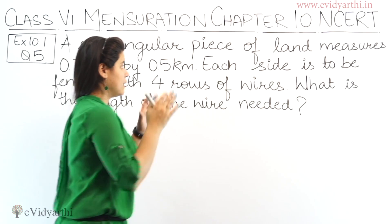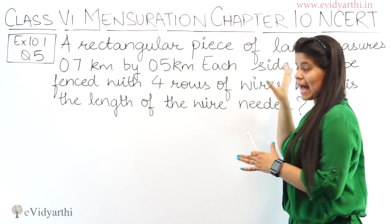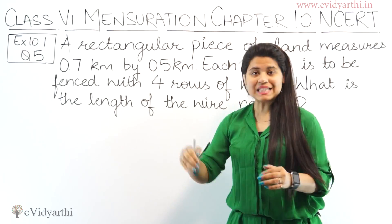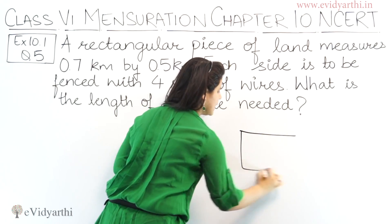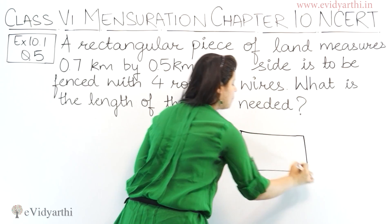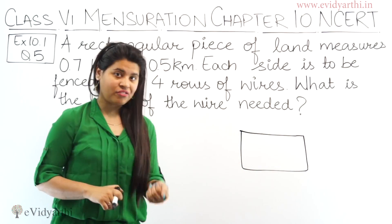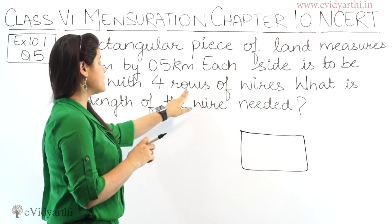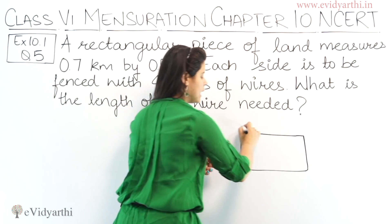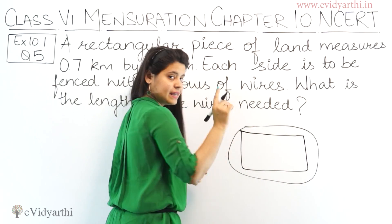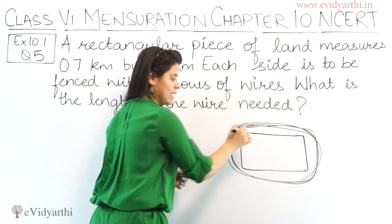What is the length of the wire needed? Here we have a rectangular piece of land with the measurement given. So this is your rectangular piece of land and we have to make this fence along the boundary. It is made with 4 rows of wires — just like that, the whole round is wrapped: one, two, three, and four wires required.